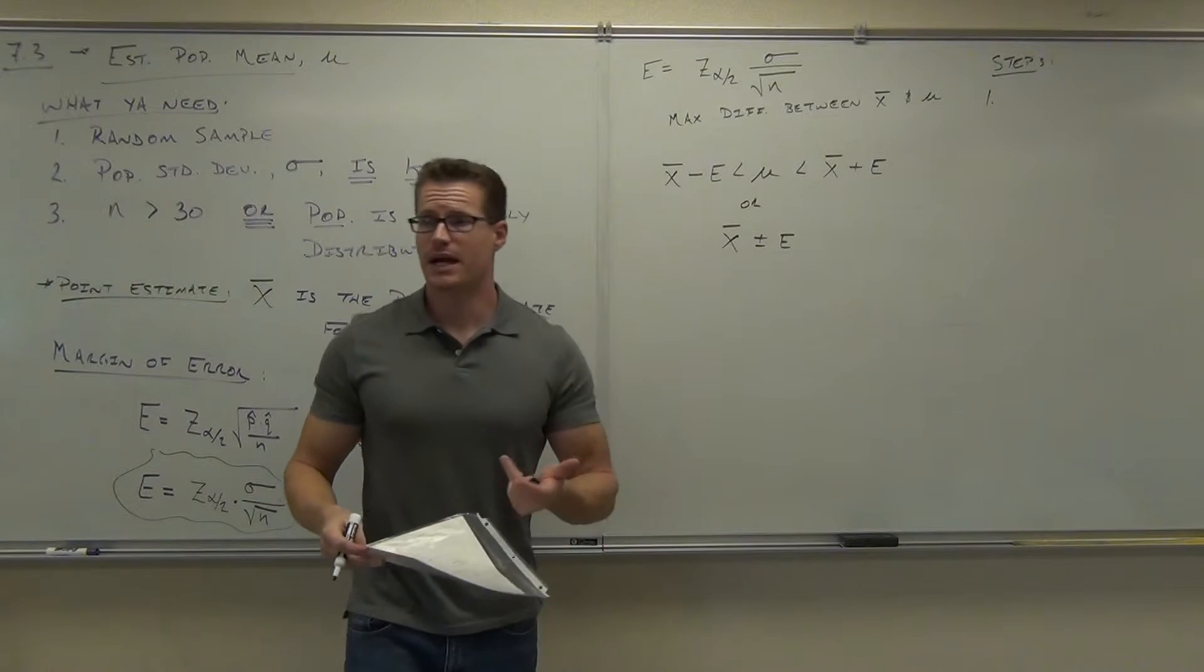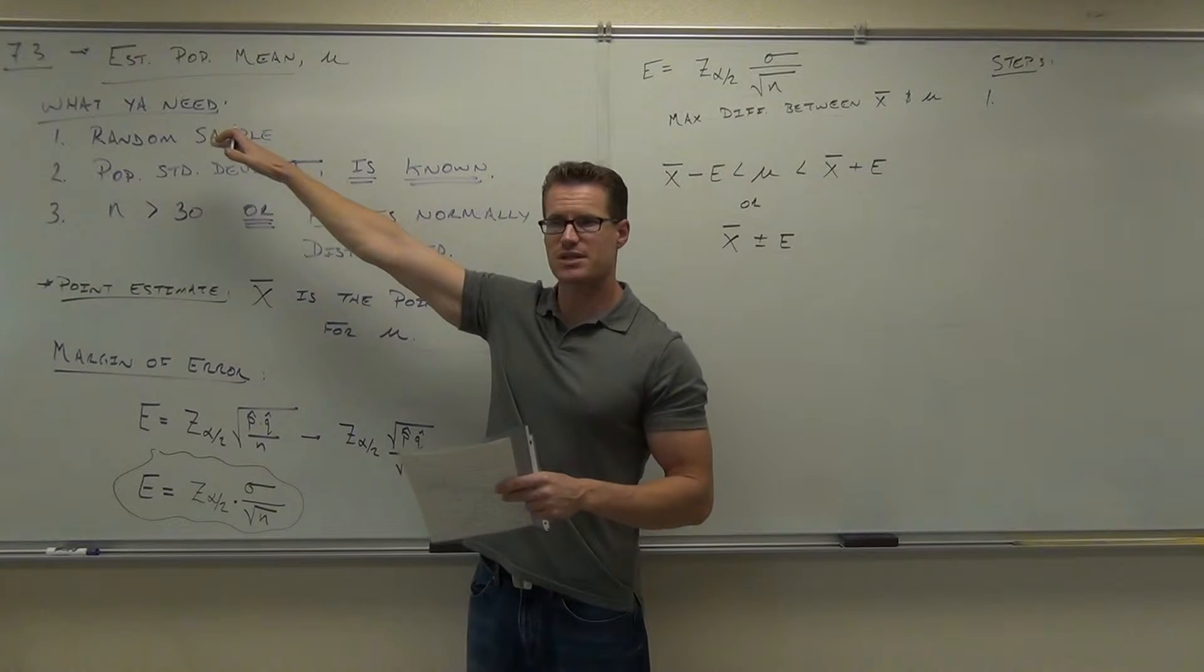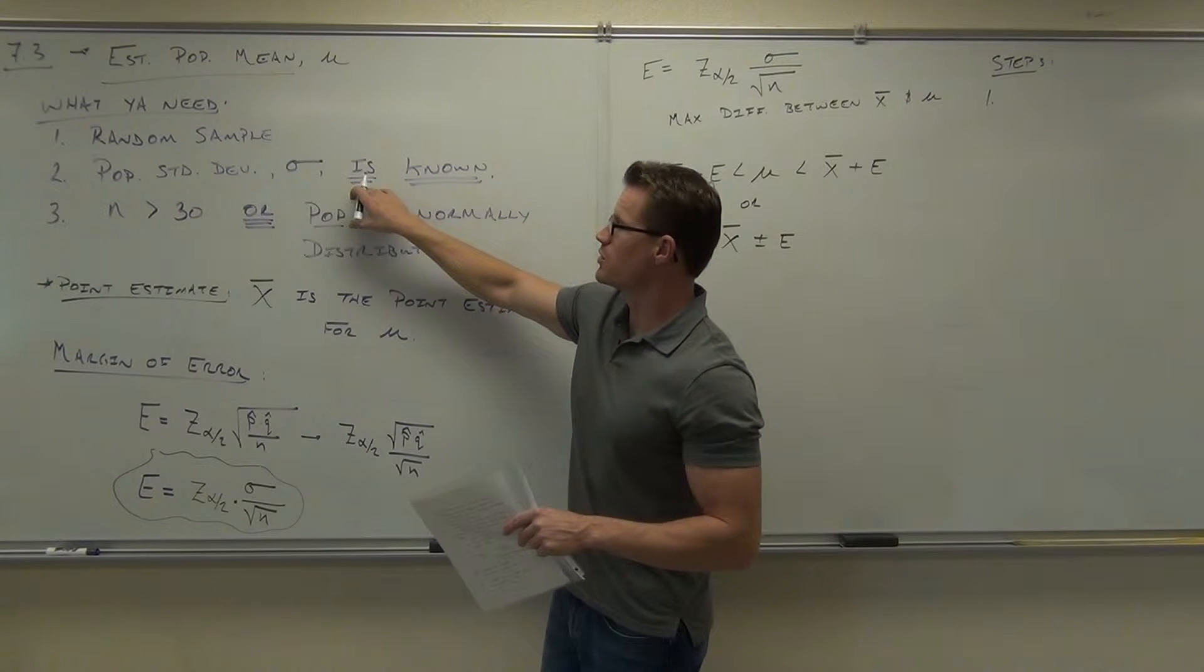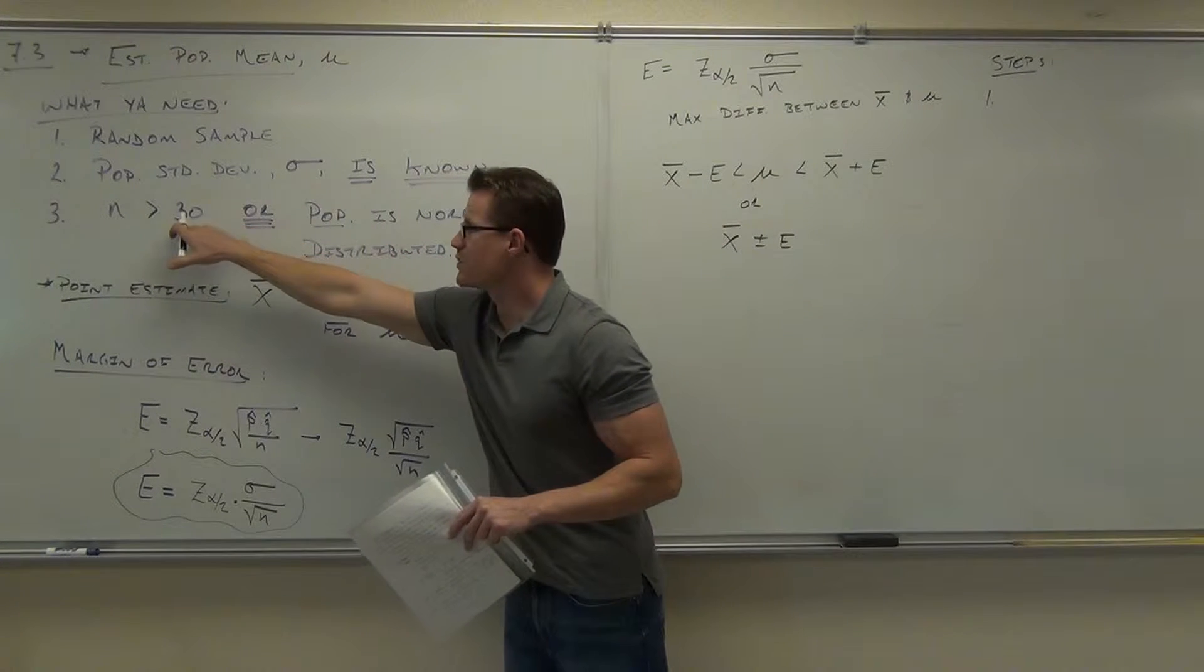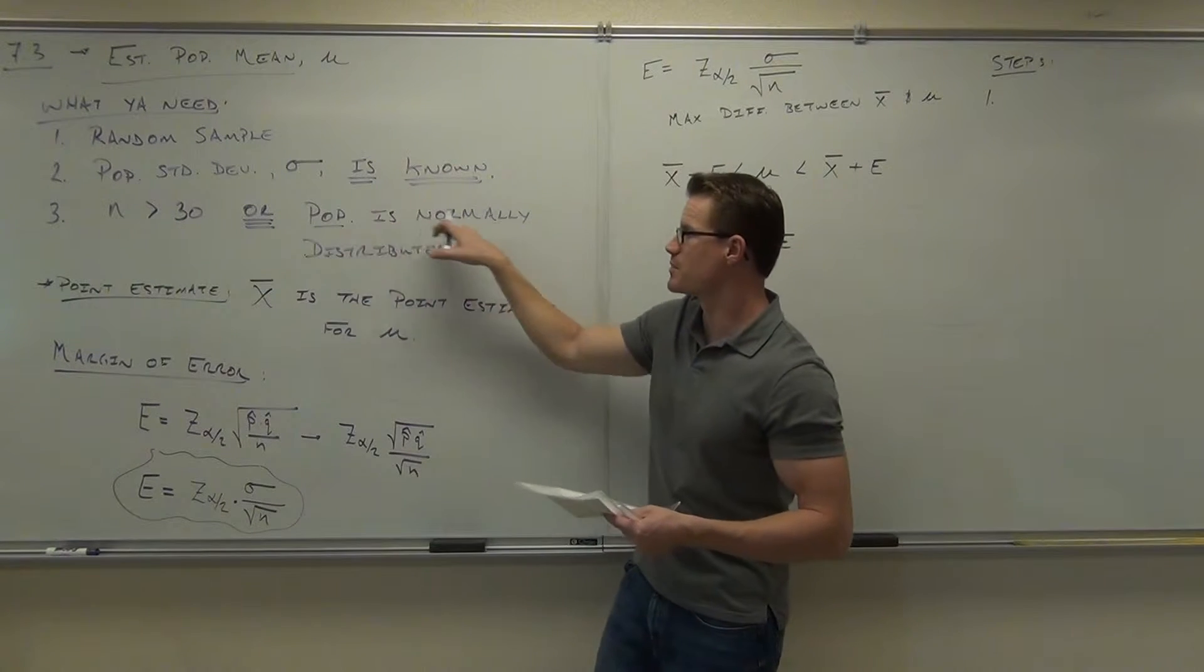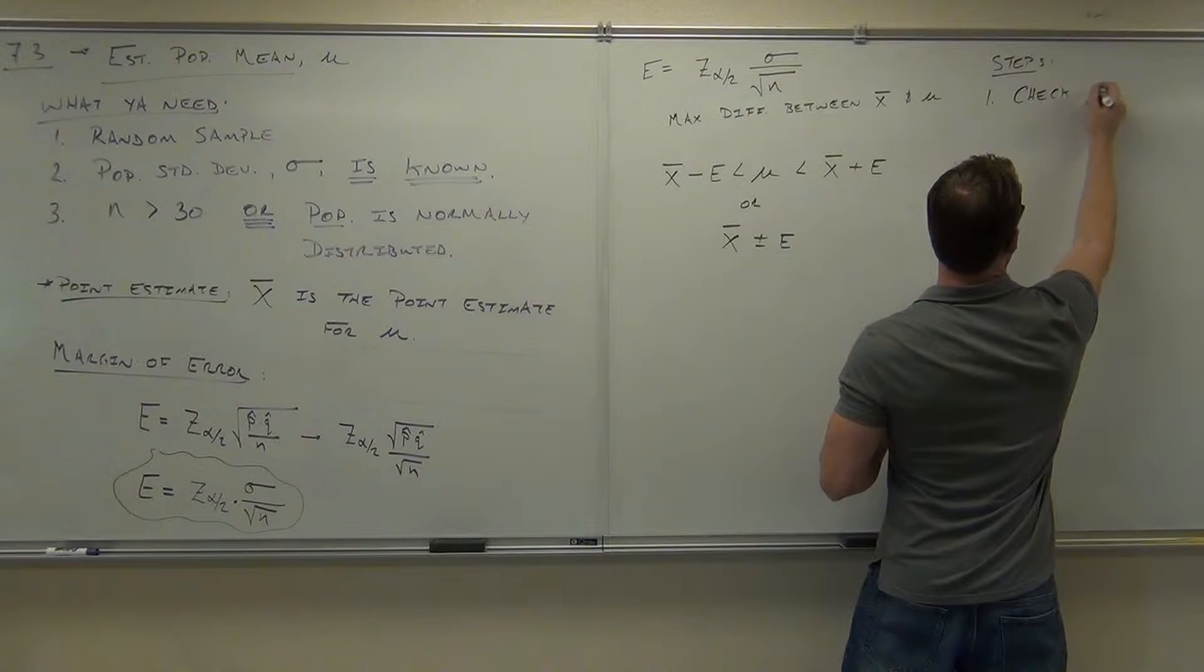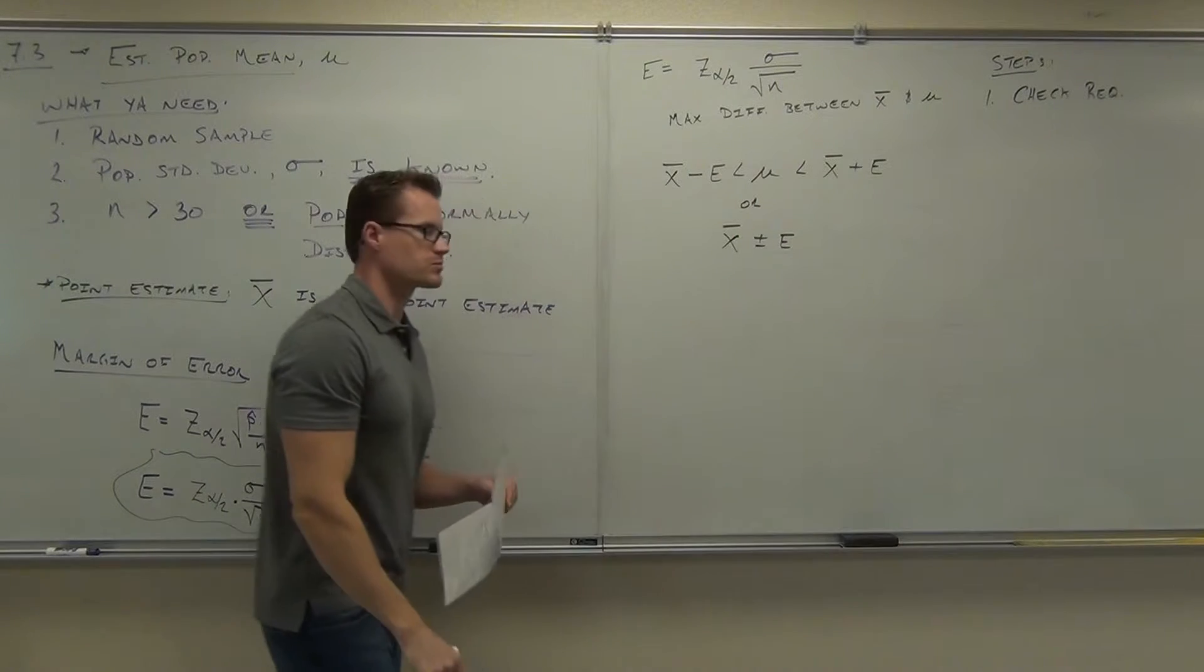So first step. Well, the first thing you've got to do, you've got to have your requirements met, right? So you're going to check these things, what you need. You're going to check to see whether you have a random sample. If it's not stated, you're going to assume it's a random sample. We've already covered all that stuff before. We're going to check to see whether you have your sigma note. It's got to say up there, assume the population standard deviation is. You've got to have that. And then we're going to see whether our sample size is bigger than 30. If it is, great. If it's not, we have to have this statement. The population is normally distributed. We've got to check those requirements. First thing, check requirements. They've got to be met.